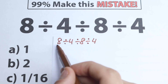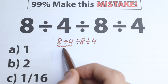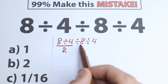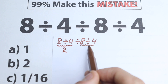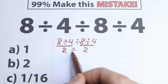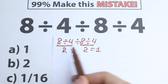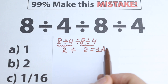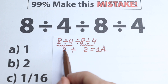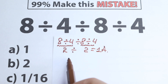8 divided by 4 — we all know from school this is basic division — equals 2. Then we have the same expression on the right-hand side: 8 divided by 4 equals 2 as well. With those two 2s in the middle, we get 2 divided by 2 equals 1. This is Option A, and it looks like an absolutely correct solution.